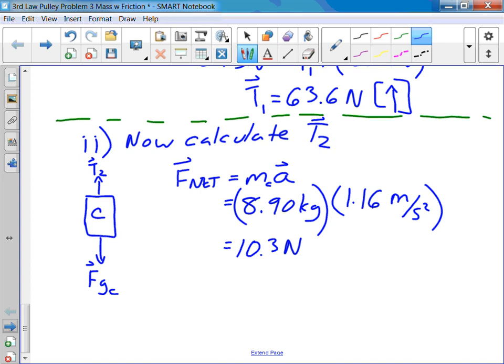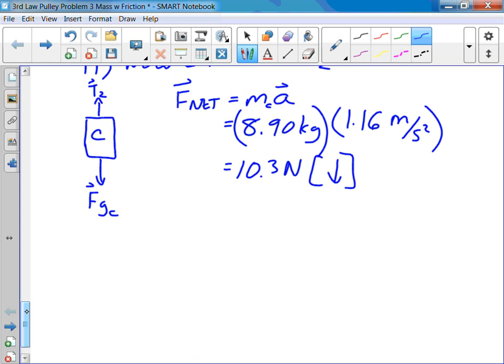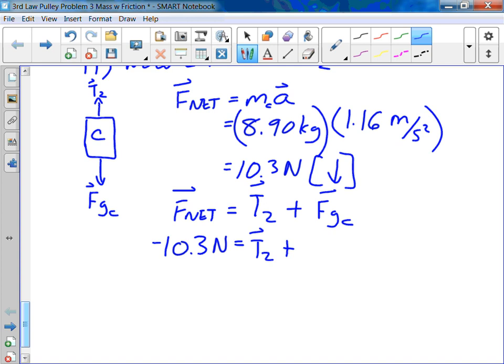Now this one, is it up as well? No. This one's moving down because now we're looking at the right-hand side of the whole system. So let's call, we'll still call up positive, so that's going to end up being negative 10.3 when we sub that in. So the net force is the sum this time of T2 plus F_g acting on block C. The net force we just calculated is negative 10.3 N. T2 is what we're solving for. And we've already calculated somewhere along the lines of force of gravity acting on block C.